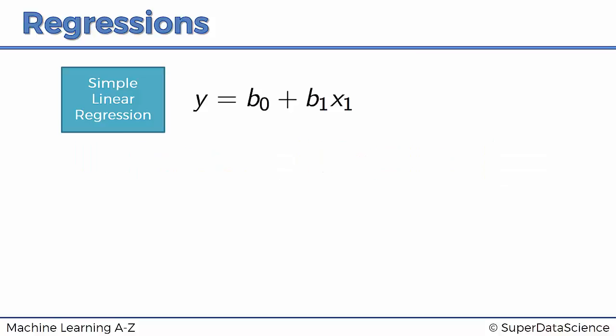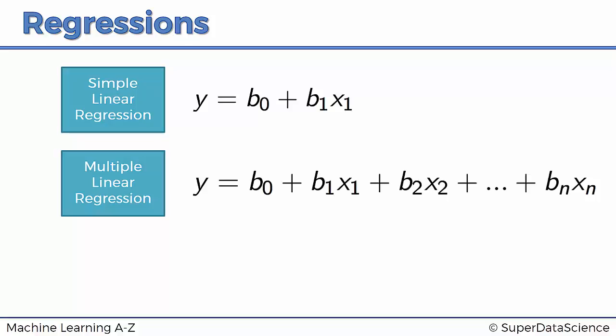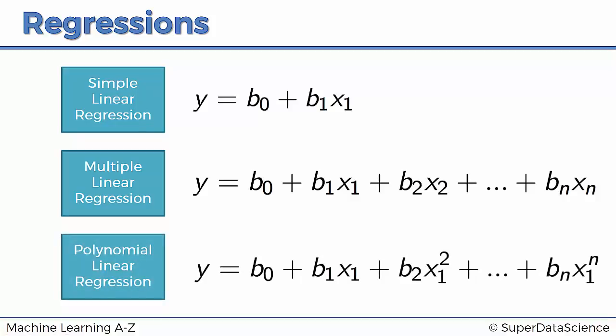We already know a couple types of regressions. We know the simple linear regression which we can see over here, then we've also discussed the multiple linear regression which is written out over here, and finally we've got the polynomial linear regression which is written out here. Notice how it's very similar to the multiple linear regression.